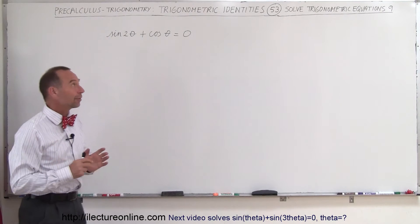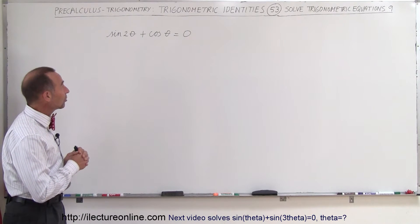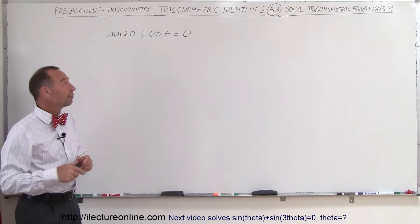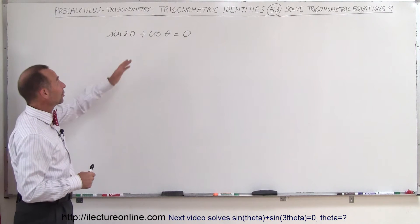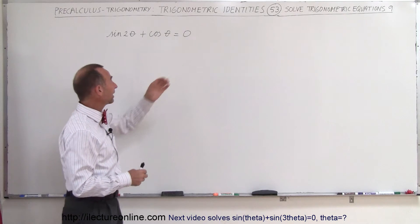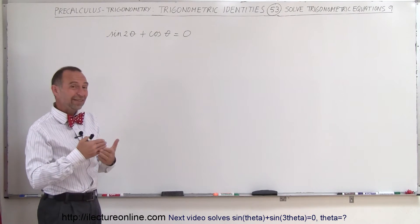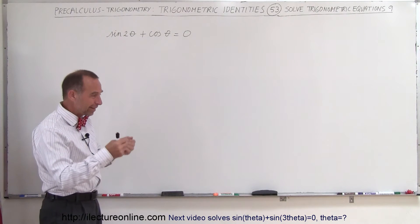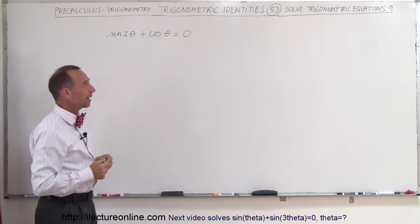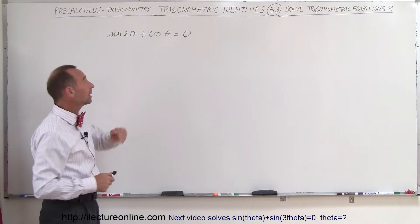Welcome to our lecture online. Now we have a trigonometric equation here that is a little bit more challenging for us to solve. What might be tempting here is simply to move the cosine of theta to the other side and then try to figure out when is the sine of 2 theta equal to negative the cosine of theta. But in trial and error you might be able to figure that out, but there's a better way to do it.